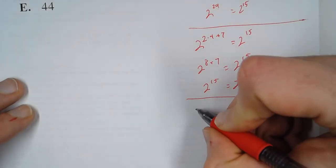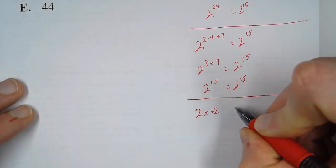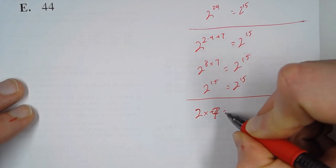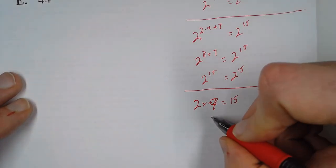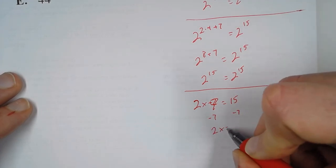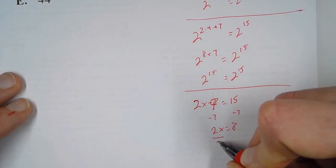Another way you could approach this is to say this power, 2x plus 7, equals the other power, 15. To solve that, we subtract 7. So 2x equals 8. Then we divide by 2.